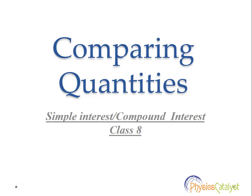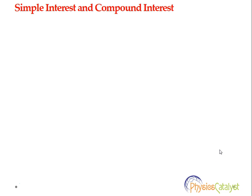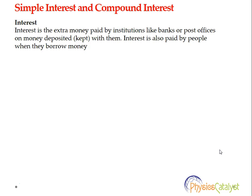Welcome students. Today we would be discussing simple interest and compound interest in the comparing quantities chapter of class 8th. Interest is extra money paid by an institution like banks or post offices on money deposited or kept with them. Interest is also paid by people when they borrow money. If you keep money in the bank you will get interest; if you take money from the bank you have to give interest to the bank.